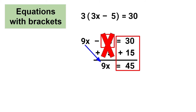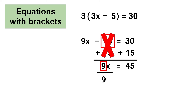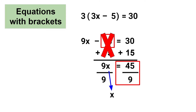Now we have the equation 9x equals 45. To isolate the variable x I need to remove the coefficient 9. To remove terms we need to use the opposite operation — 9 is being multiplied by x, and the opposite of multiplication is division. So to remove 9 on the left side I need to divide by 9 on the left side, and that means I also need to divide by 9 on the right side. On the left side, 9x divided by 9 equals x, and on the right side, 45 divided by 9 equals 5.